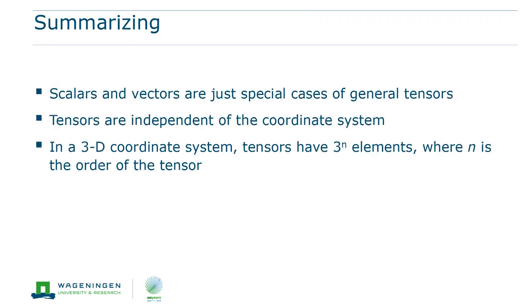Now to summarize, keep in mind the following. Scalars and vectors are just special cases of general tensors. Secondly, tensors are independent of the coordinate system. And finally, in a 3-dimensional coordinate system, tensors have 3 to the power n elements, where n is the order of the tensor.